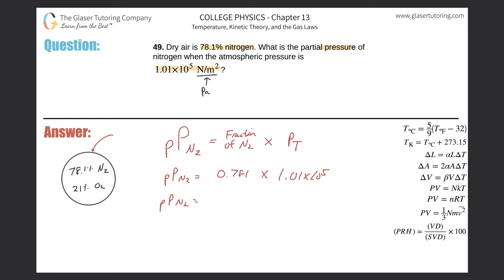So we have 0.781 multiplied by 1.01 times 10 to the fifth. And we get an answer of about 7.88 or so, or 7.89 considering rounding, times 10 to the fourth. And that's in Pascal. So this would then be the pressure of the nitrogen component of the overall atmospheric gas.